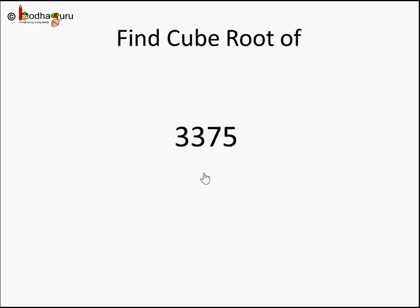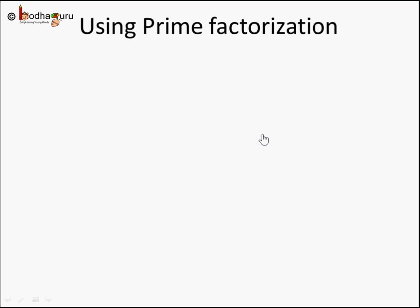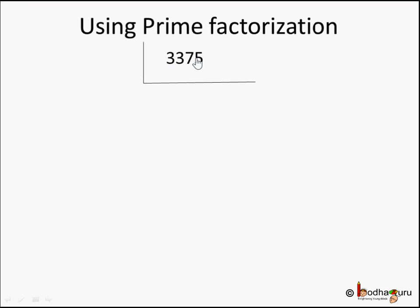Let's say we are given 3375 as the number whose cube root we need to find using the prime factorization method. We write the number and start with 2, taking each prime number and trying to divide it. Can 3375 be divided by 2? No — it ends with 5, it's an odd number, so it cannot be divided by 2. Let's try 3. Yes, we can use 3.